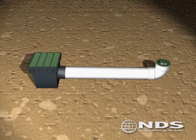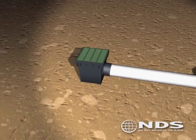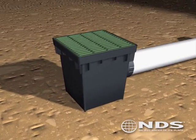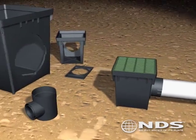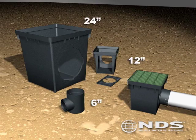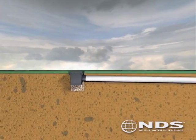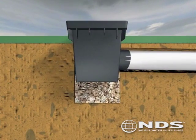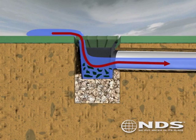A drainage system has three major phases: collection, conduction, and discharge. The most widely used component of the collection phase is a plastic catch basin. Plastic catch basins come in different sizes and shapes, from a 6-inch round speedy basin to a 24-inch square catch basin. Catch basins have a sump area beneath the pipe connection that catches any leaves or debris before they enter the drainage pipe and potentially clog the system.